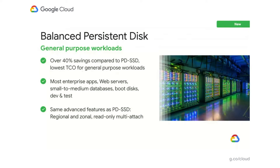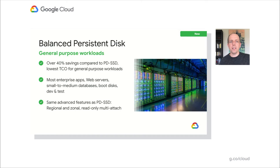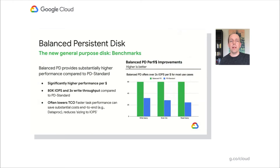Generally available this month, Balanced PD is our new general purpose disk for Google Compute Engine. It offers SSD performance and represents an over 40% saving compared to Performance PD, offering the lowest TCO for general purpose workloads. Balanced PD has the right performance for most enterprise apps, web servers, and even some small and medium databases. It also offers many of the same advanced features you already know from Performance PD. You can create regional or zonal volumes, and you can attach multiple instances to a single volume in read-only mode. Balanced PD replaces standard PD as the new general purpose disk.